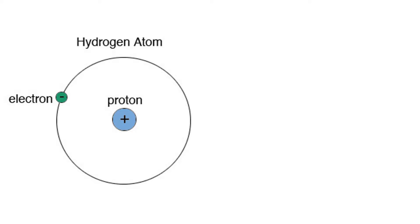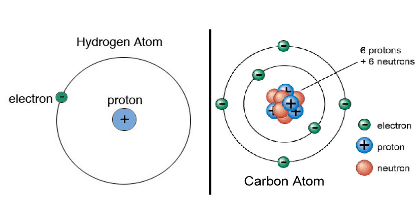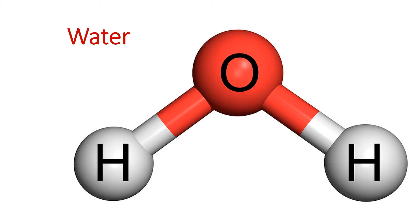Hydrogen, the lightest element, for example, has the atomic number one because it has one proton in its nucleus. Carbon, the most important element for life, on the other hand, has six protons — its atomic number is six. Atoms come together to form chemical compounds: substances consisting of two or more elements combined in a fixed proportion. The atoms are held together by bonds, like strong covalent bonds or weak ionic bonds.